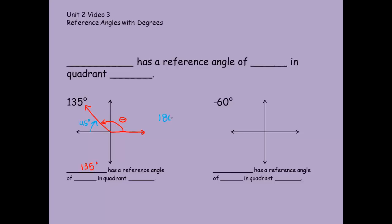I know that because it's 180, which is this line right here, minus 135 to find the difference. So it's 45 degrees. That is the reference angle. And we're going to say that 135 is in quadrant 2, where it's located. So that's how we complete our sentence. 135 degrees has a reference angle of 45 degrees in quadrant 2.